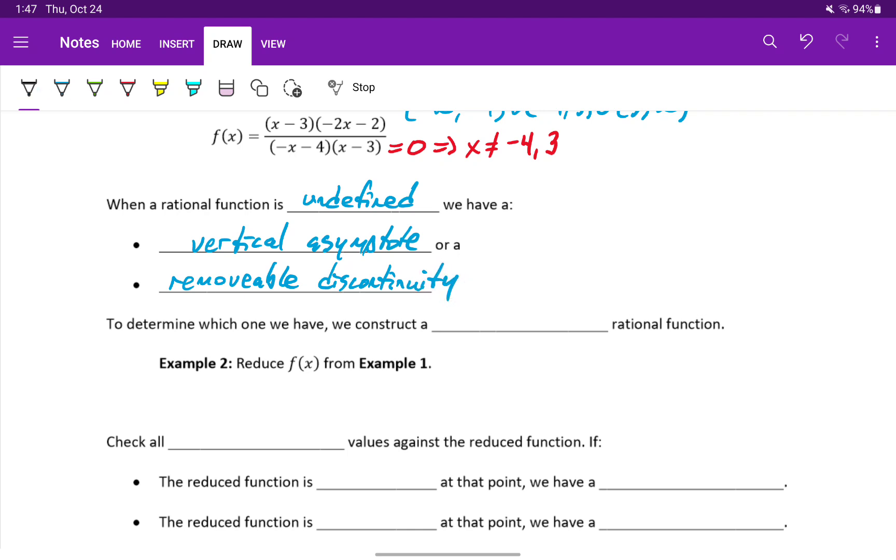Or the simpler way to say that is a hole in the graph. So just to make up a rational function here, we could have a graph that looks like this. We know that the function we're looking at right now has two different restricted values. That could take the form of either a vertical asymptote, or again this hole in the graph, or that removable discontinuity.